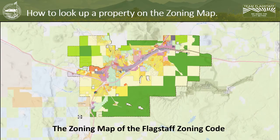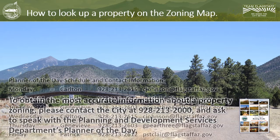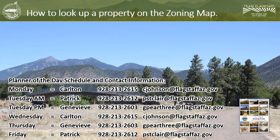How to look up a property on the zoning map. The city attempts to keep its website information up to date, although to obtain the most accurate information about the property zoning, please contact the city at 928-213-2000 and ask to speak with the Planning and Development Services Department's Planner of the Day. In addition, you may contact the Planner of the Day directly in accordance with the following days, times, phone numbers, and email addresses.